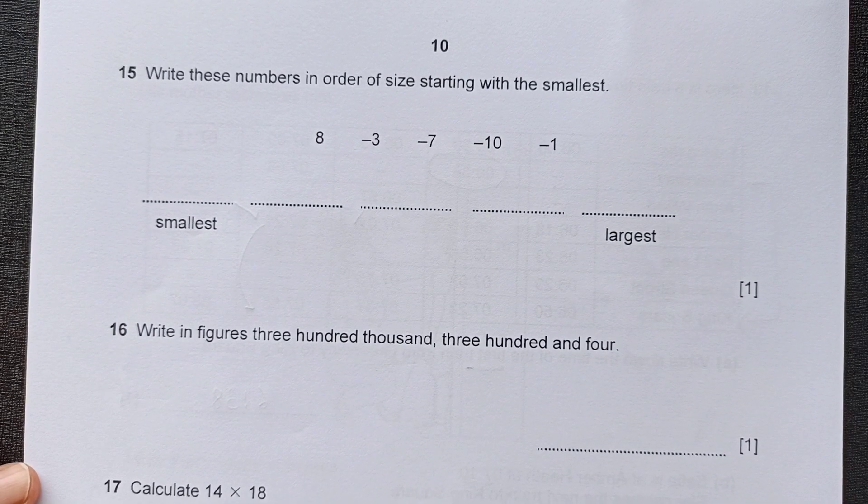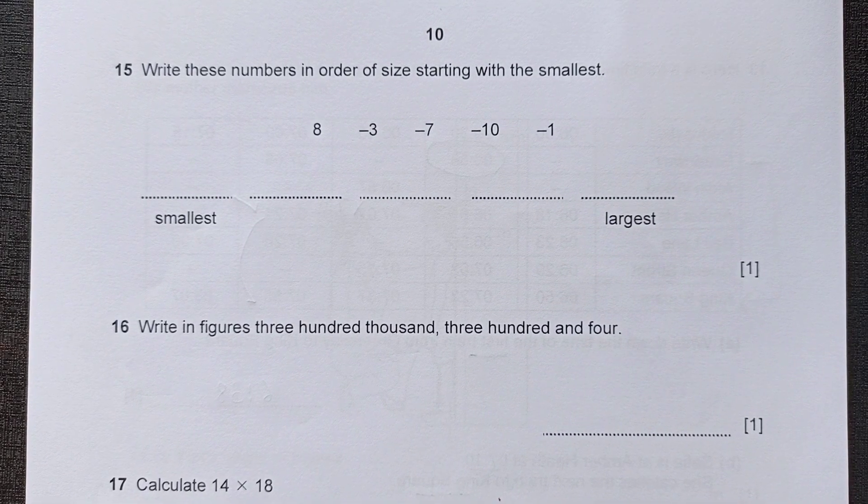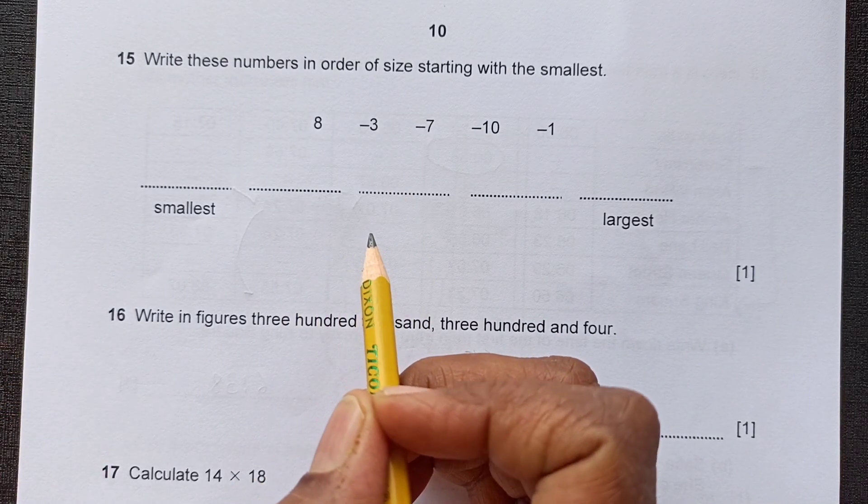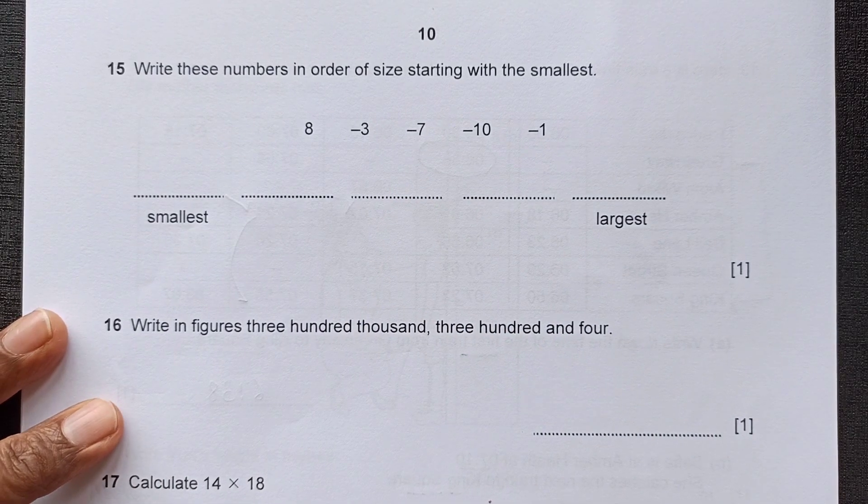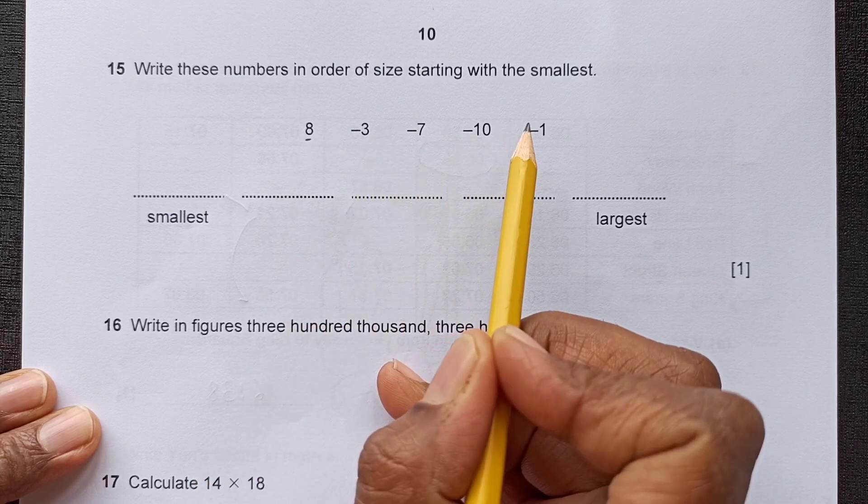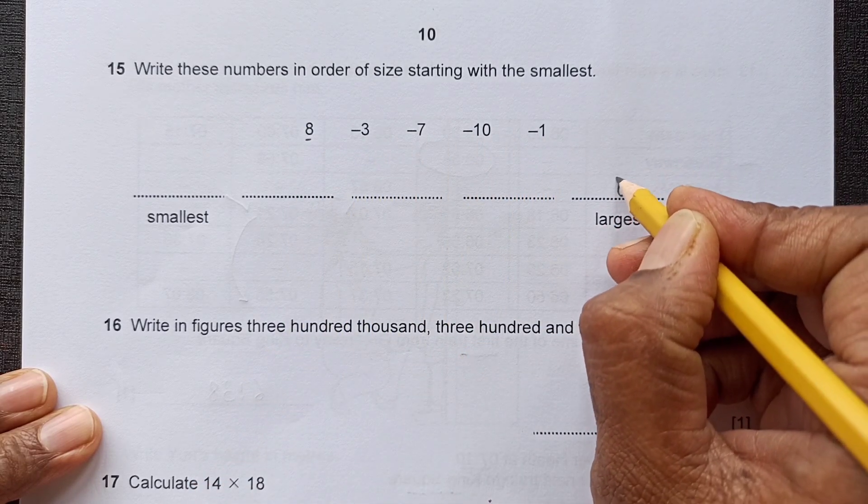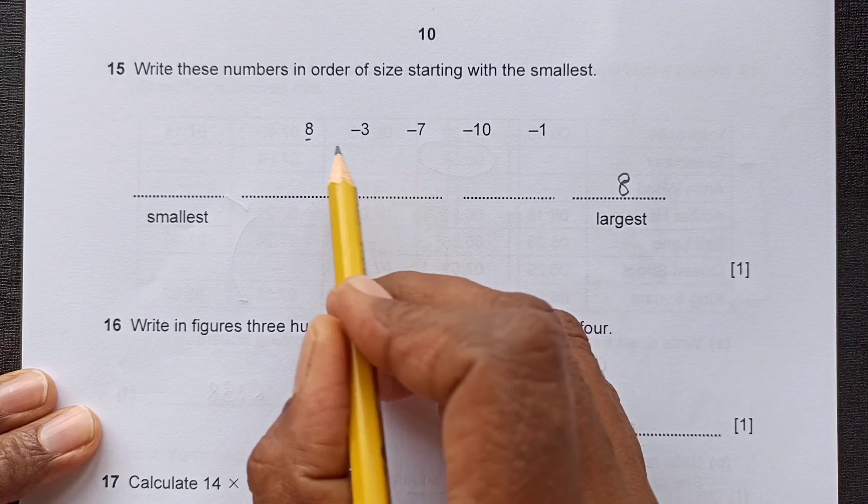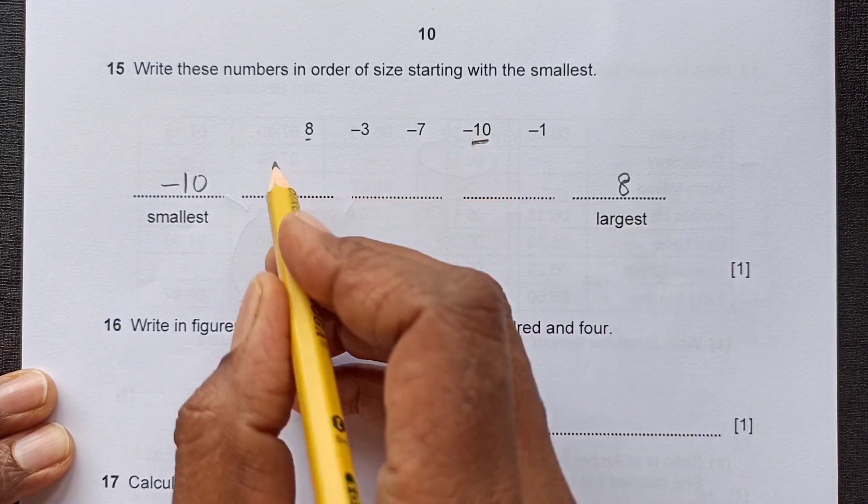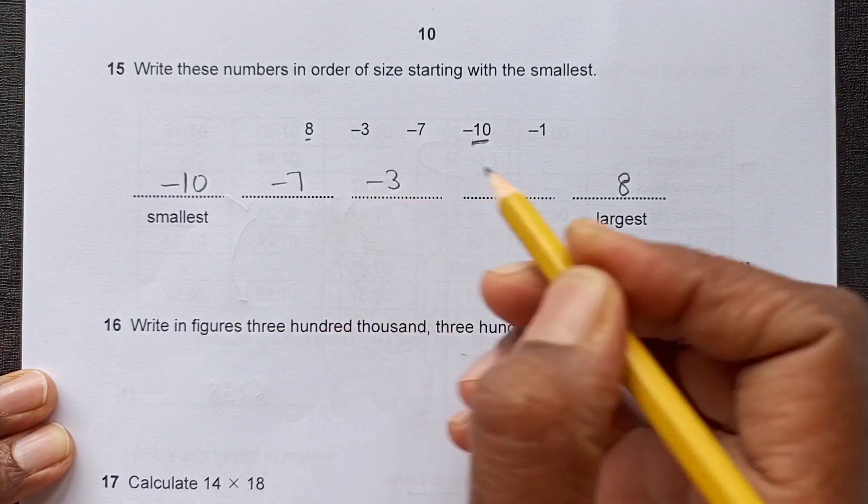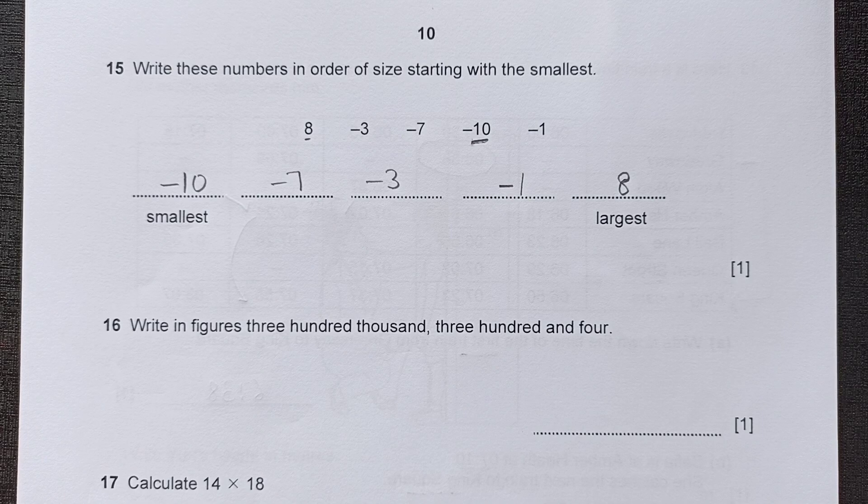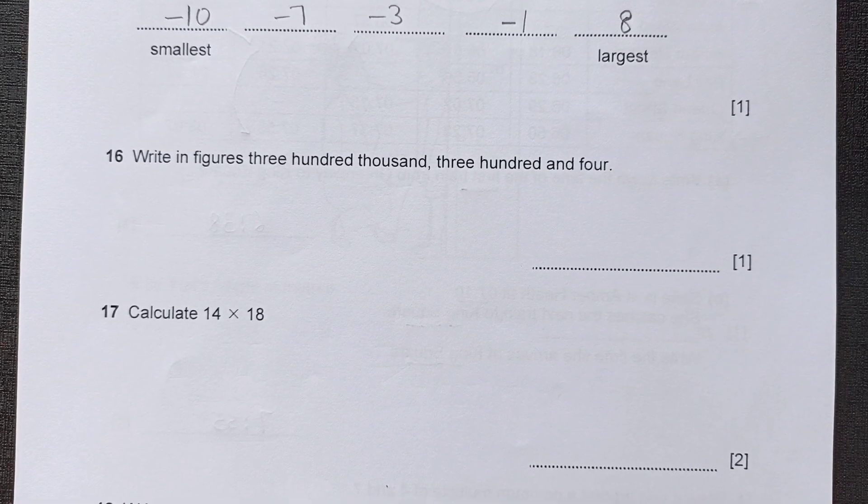Question 15. Write these numbers in order of size starting with smallest. So we will start with the smallest number. You can see we have positive numbers and negative numbers. The positive number will be the largest one, which is 8 here. All the other numbers are negative. So 8 will come in the largest place. Then smallest among these will be negative 10 first. After that is negative 7, negative 3, then negative 1. Very simple question. You need to be careful about the signs here.